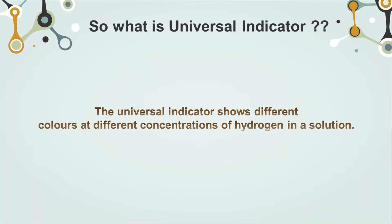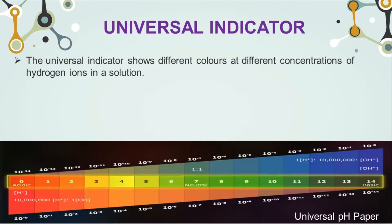The universal indicator shows different colors at different concentrations of hydrogen ions in a solution. When we put this indicator in a solution, it shows different colors, and from the color we are able to identify the concentration of hydrogen ions in that solution.